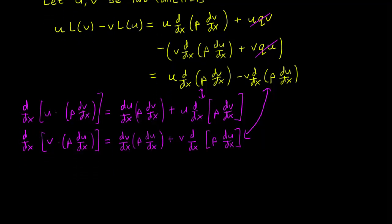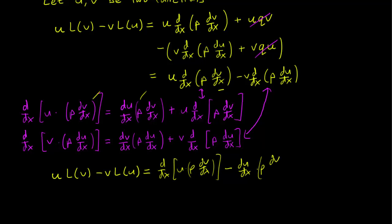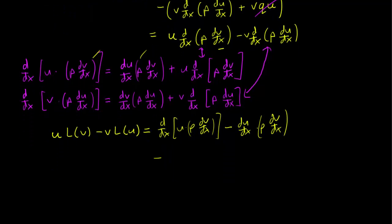For the first term, we replace u d/dx(p dv/dx) with the result from the product rule. We end up with d/dx(u p dv/dx), but we have to subtract du/dx p dv/dx as well. Then the same thing with the second term, except we replace all the v's with u's and all the u's with v's. So we have d/dx(v p du/dx) minus dv/dx p du/dx.